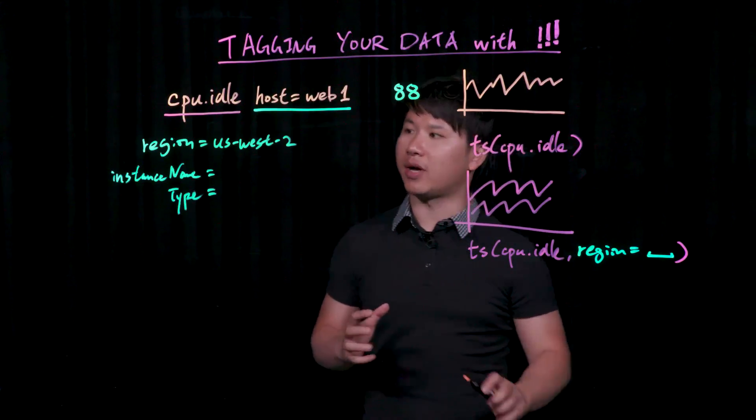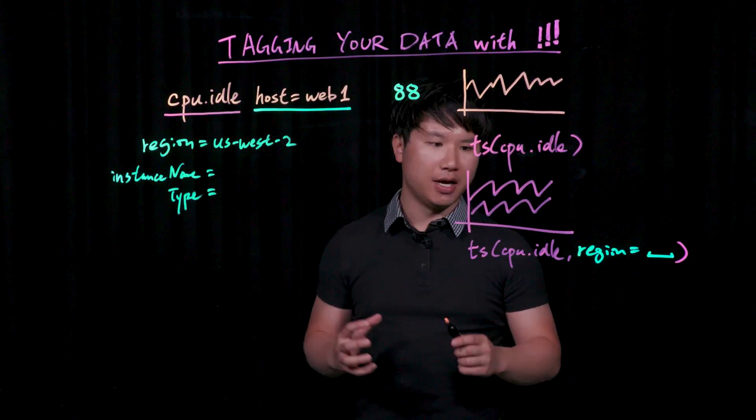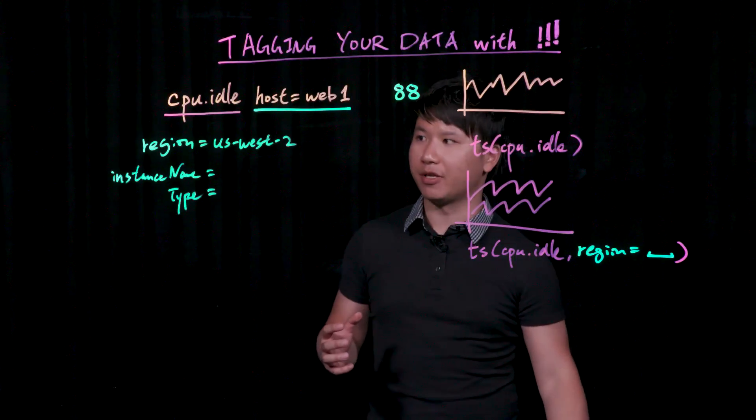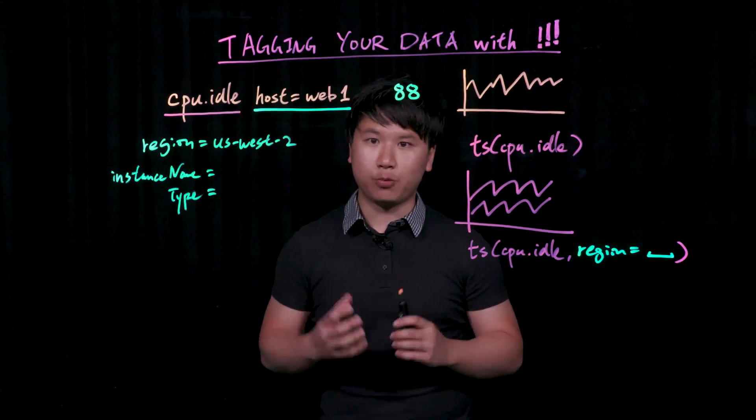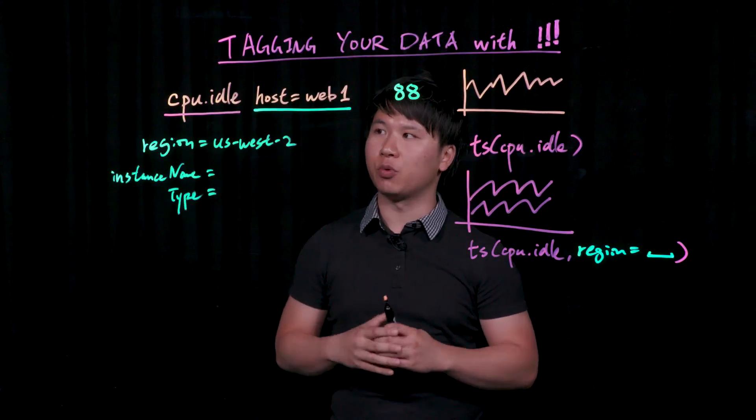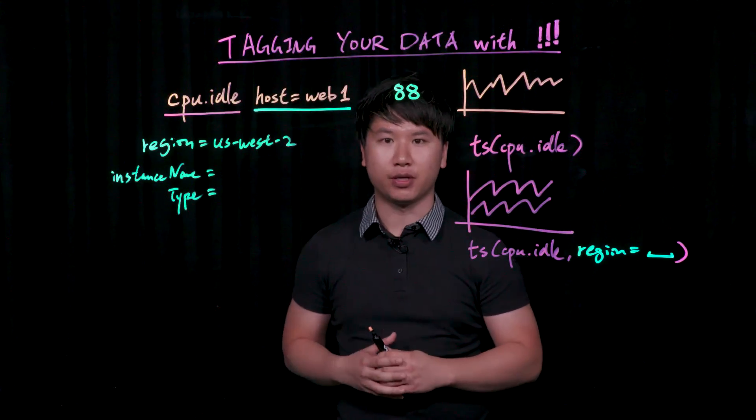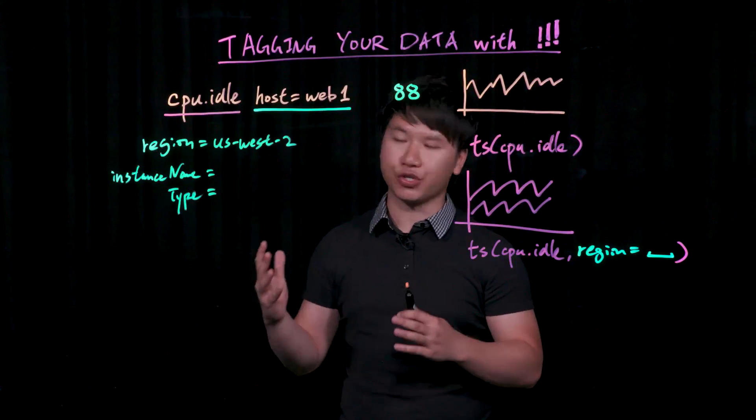Now, we have aggregation functions that allow you to actually very easily collapse data across many different time series into just the dimensions that you're interested in. For example, you may be wanting to look at CPU idle information, and you want to look at what is my average CPU utilization across an entire region.